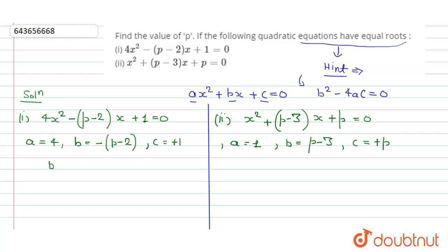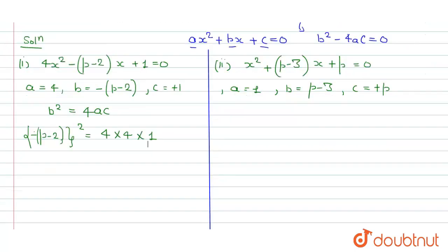When roots are equal, b squared equals 4ac. For Part 1, substituting: b squared is minus(p minus 2) all squared, and 4ac is 4 times 4 times 1, which equals 16. Since squaring removes the negative sign, we get (p minus 2) squared equals 16.